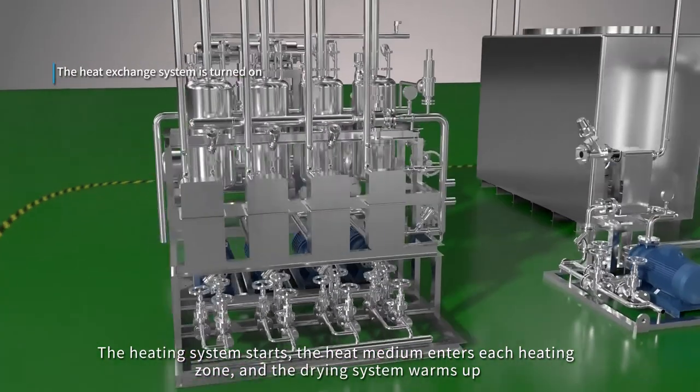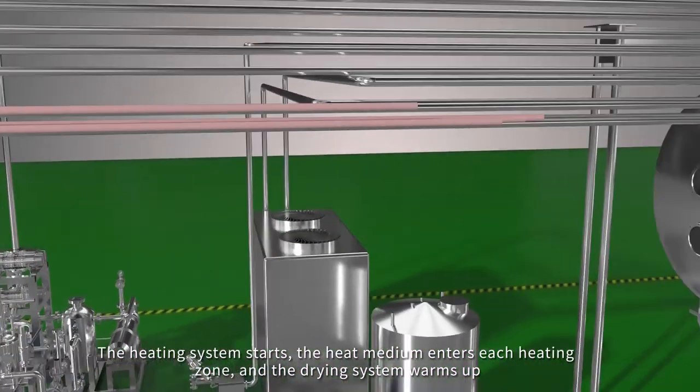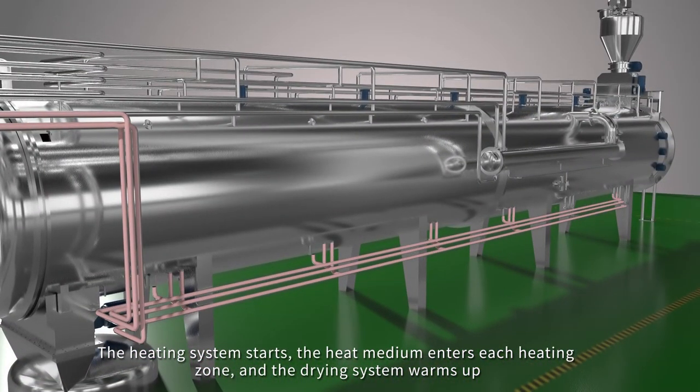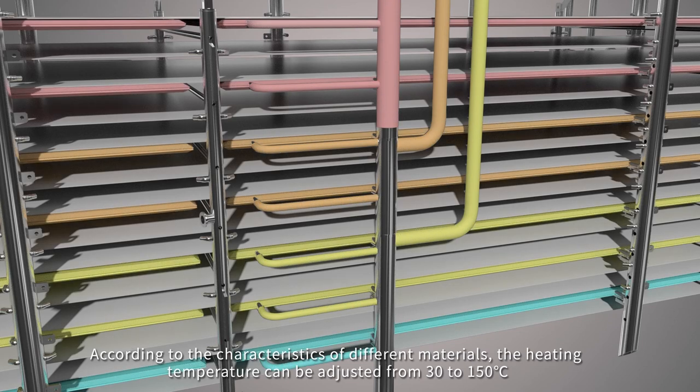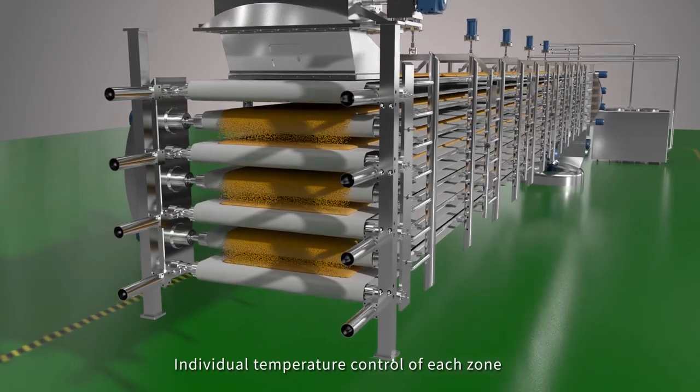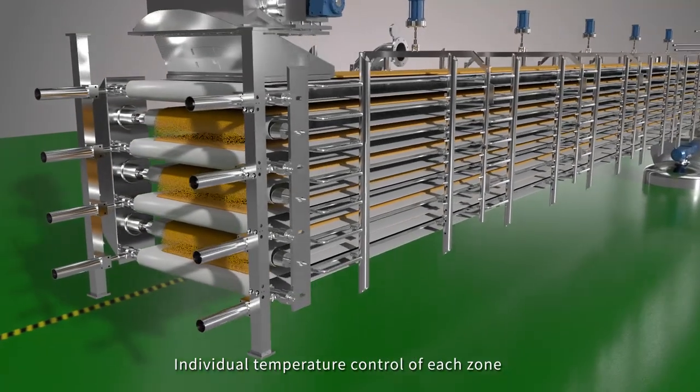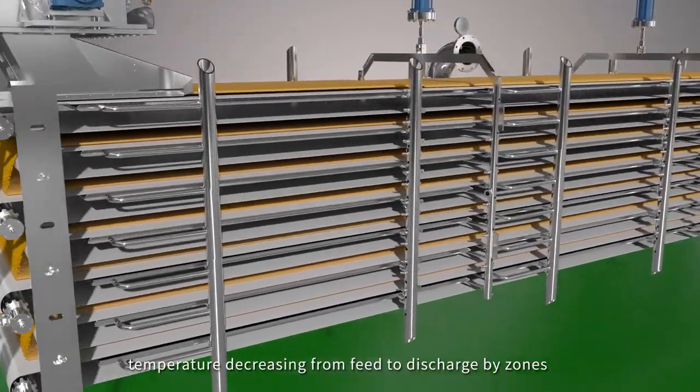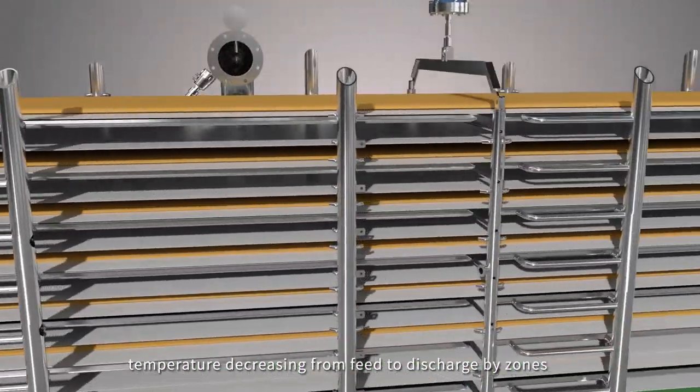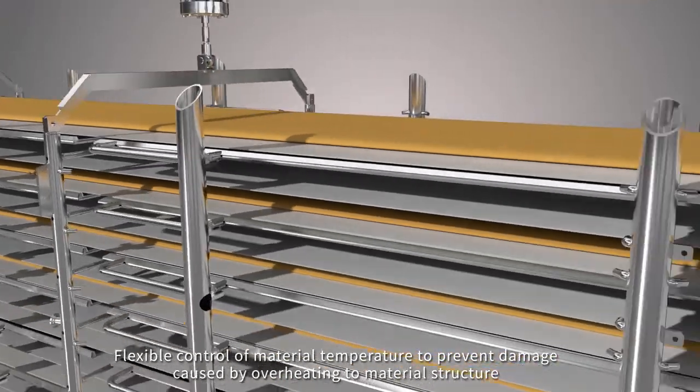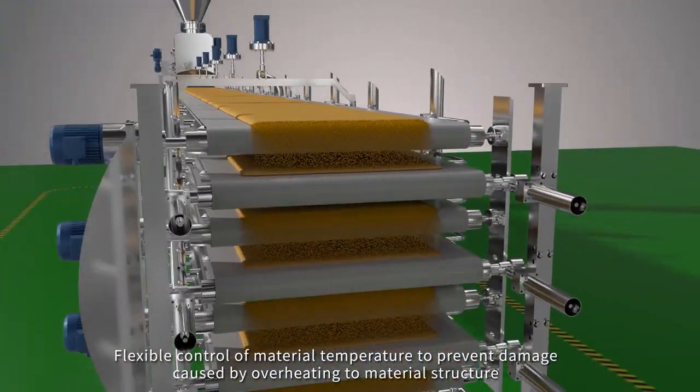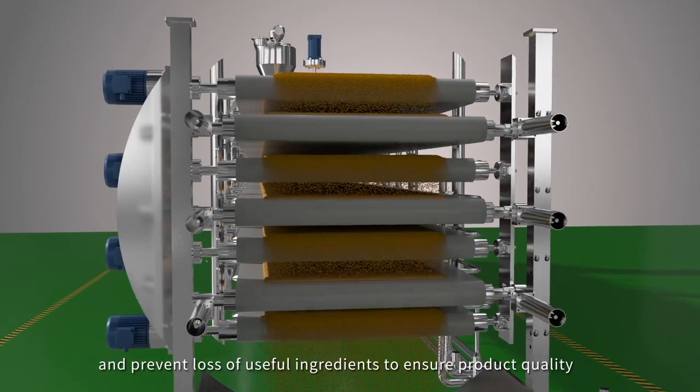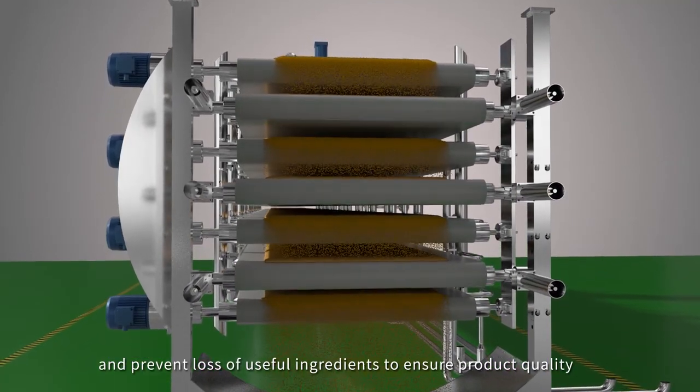The heating system starts, the heat medium enters each heating zone, and the drying system warms up. According to the characteristics of different materials, the heating temperature can be adjusted from 30 to 150 degrees Celsius. Individual temperature control of each zone. Temperature decreasing from feed to discharge by zones. Flexible control of material temperature to prevent damage caused by overheating to material structure and prevent loss of useful ingredients to ensure product quality.